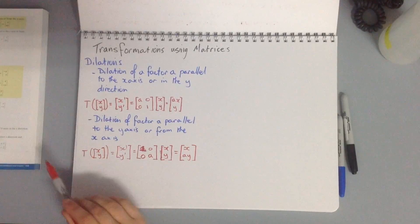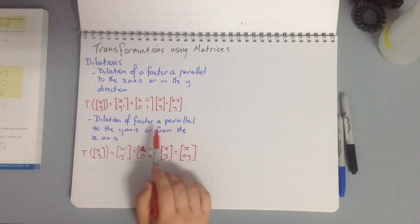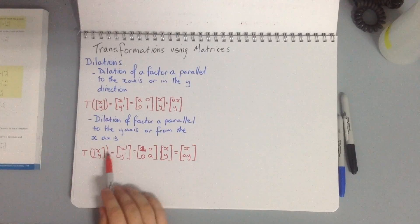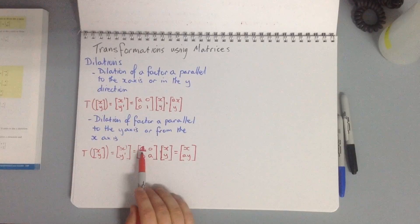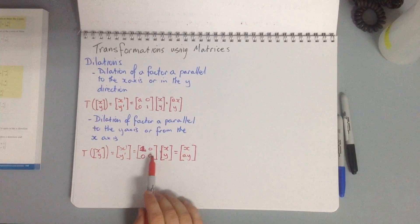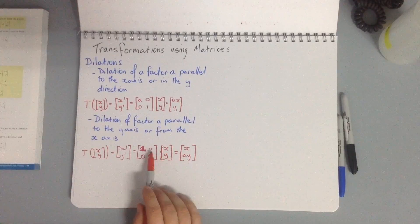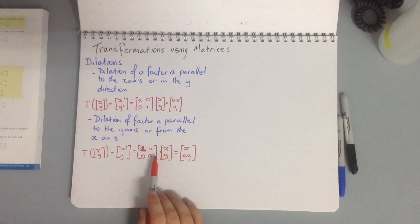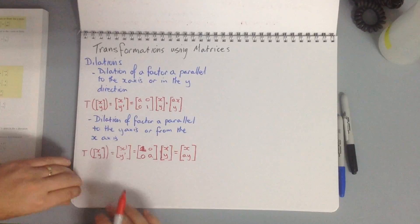Similarly, for a dilation factor of 'a' parallel to the y-axis or from the x-axis, the transition matrix is: [x', y'] = [[1, 0], [0, a]] × [x, y]. Running and diving: 1×x + 0×y gives x, and 0×x + a×y gives ay. We'll do some work examples soon.